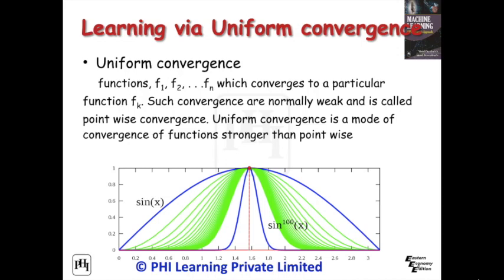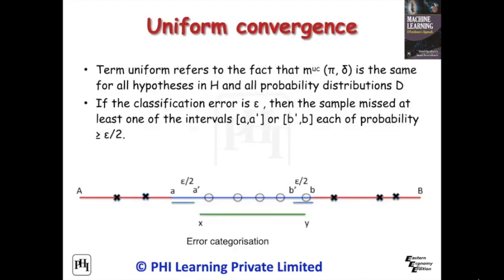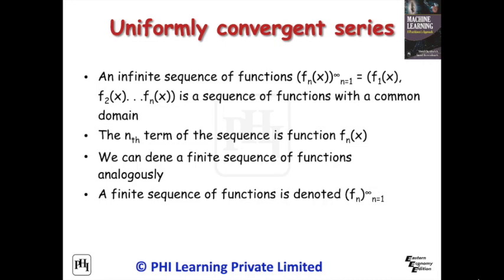Uniform convergence is a mode of convergence of functions stronger than pointwise, as shown in the figure. A sequence of functions converges uniformly to a limiting function on a set if, given any arbitrarily small positive number, the definition of uniform convergence is satisfied. For uniform convergence, error categorization is given in the figure.